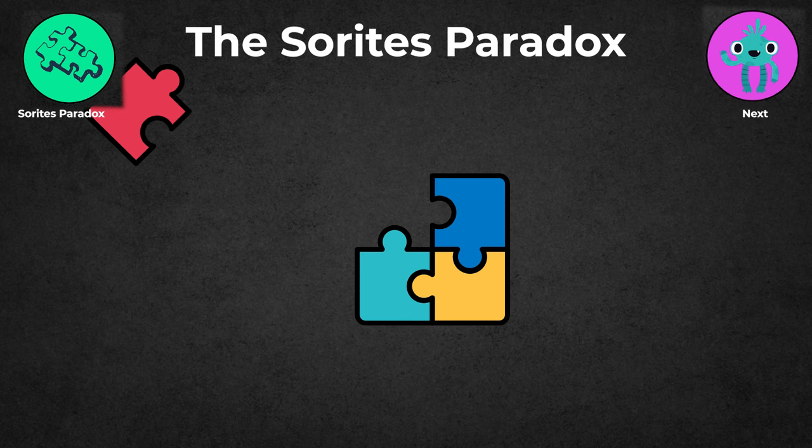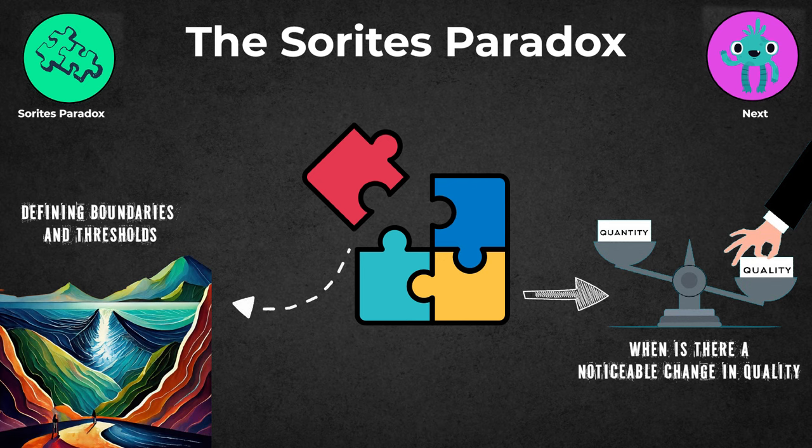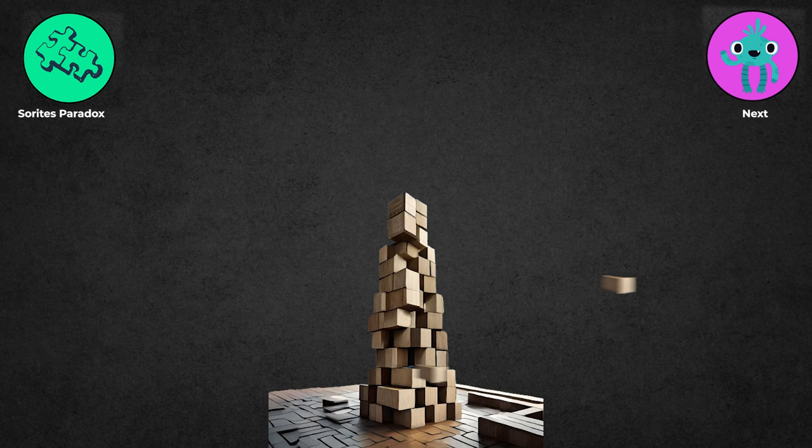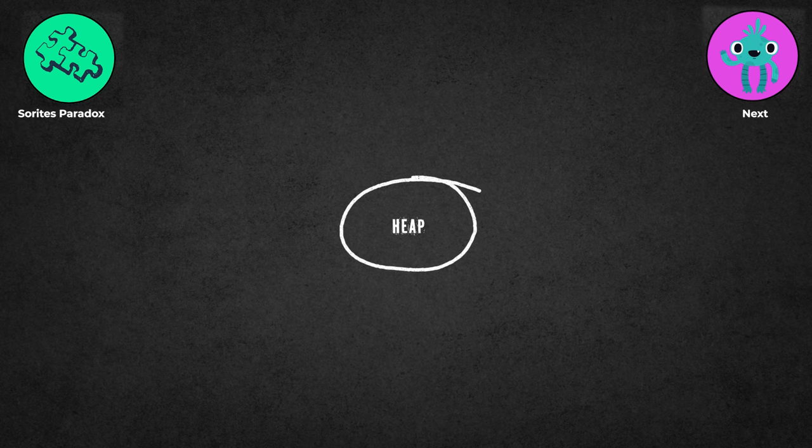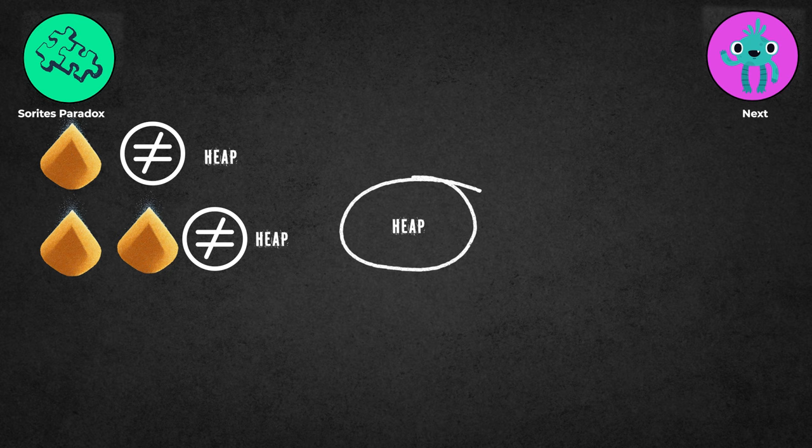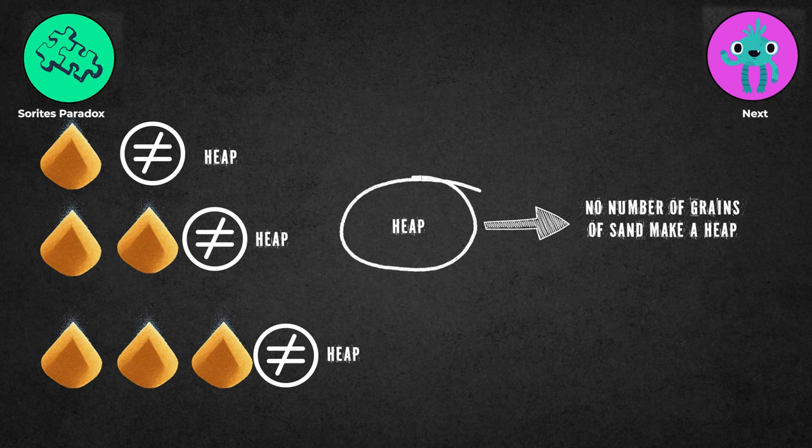The Sorites Paradox: This experiment poses a puzzle about defining boundaries and thresholds. It asks, when does a slight change in quantity result in a noticeable change in quality? Picture a stack of building blocks, starting with a tall tower. As you remove blocks, the tower remains unchanged at first. Even if one more block goes, it's still a tower. This goes on until just a few blocks remain. When does it stop being a tower? The paradox does this with the term heap. It argues that one grain of sand does not constitute a heap. It follows that two grains do not, and if two do not, then three do not, and so on. This reasoning leads to the absurd conclusion that no number of grains of sand make a heap.